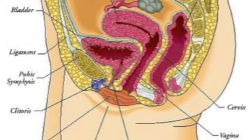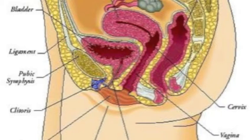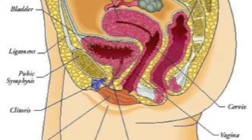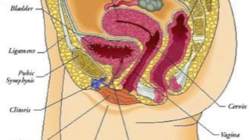If the egg gets fertilized in the fallopian tube, sometimes it can attach to the fallopian tube itself — that's an ectopic pregnancy. That's dangerous because if the fetus starts growing in the fallopian tube, it will eventually burst the tube, which can result in death or severe morbidity. Sometimes the fallopian tube is already broken, and the fertilization may actually fall out into the abdomen — a rare type of ectopic pregnancy, but there are cases on record.